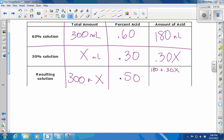I could either add the amount of acid from solution 1 to the amount of acid from solution 2, so I would have 180 plus 0.3x. Or, how else could I calculate the amount of acid in there? Times 0.5. This is the total amount of solution I have. 50% of it is acid. So if I take 50% of the total, that gives me the amount of acid. So I have two expressions for the exact same value. So I set them equal to each other. I have 180 plus 0.3x should equal 0.5 times 300 plus x.